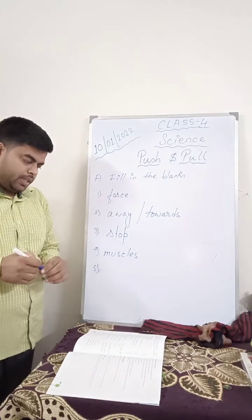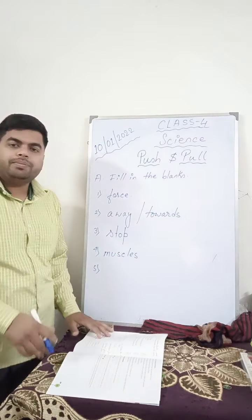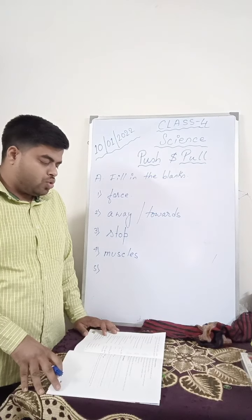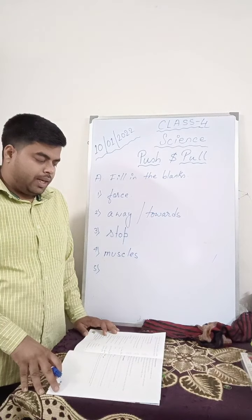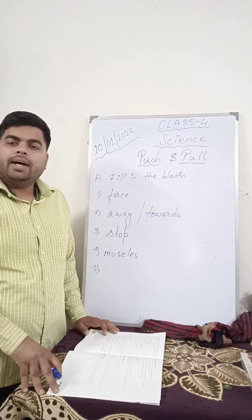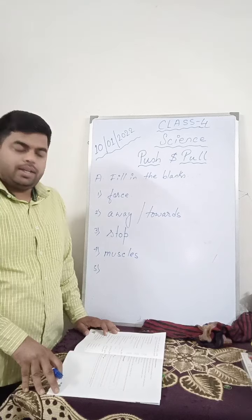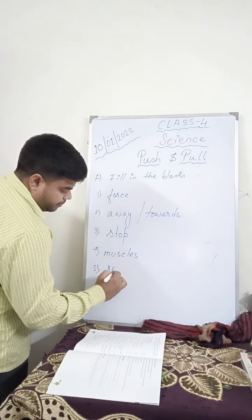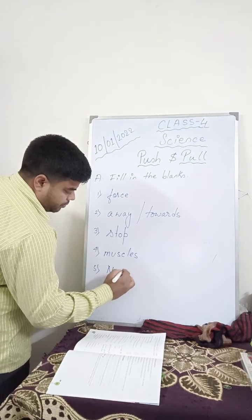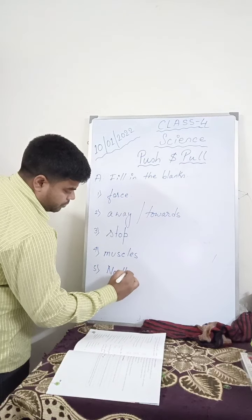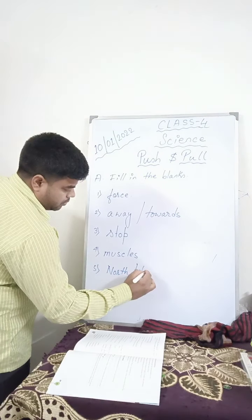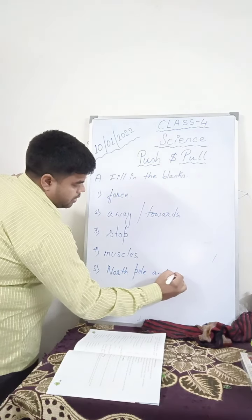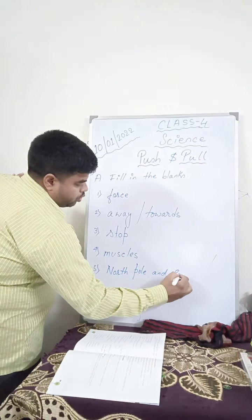Next, number 5. Magnet has two poles — the dash pole and the dash pole. The north pole and the south pole.